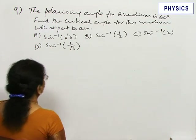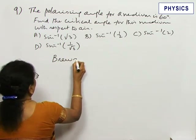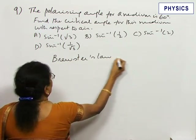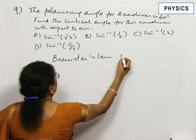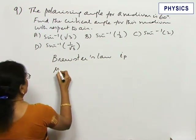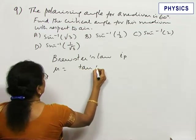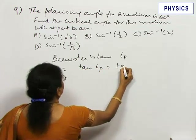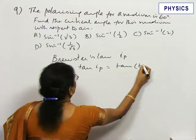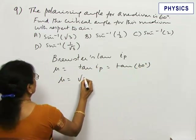By Brewster's law, if Ip is the polarizing angle, mu is given as tan Ip. In this case, tan 60. What is tan 60? Root 3.